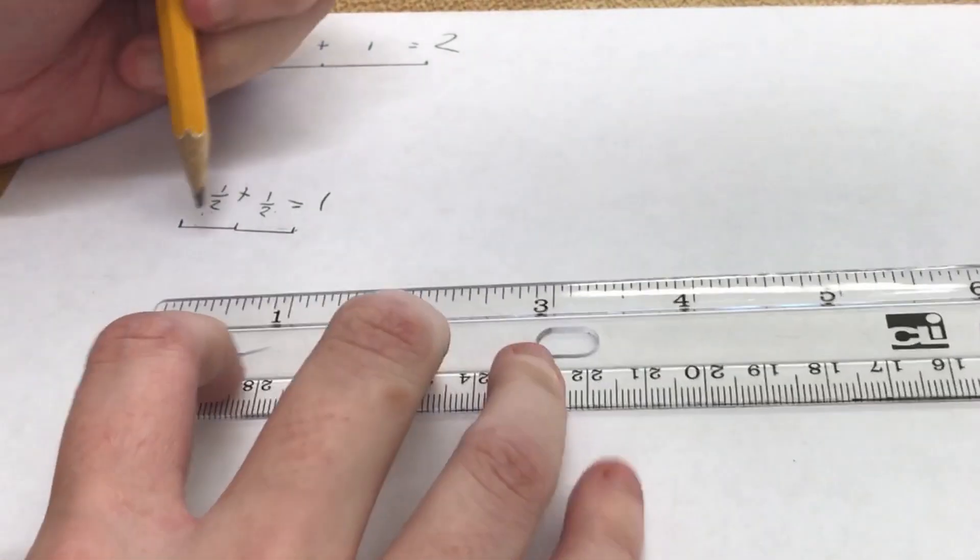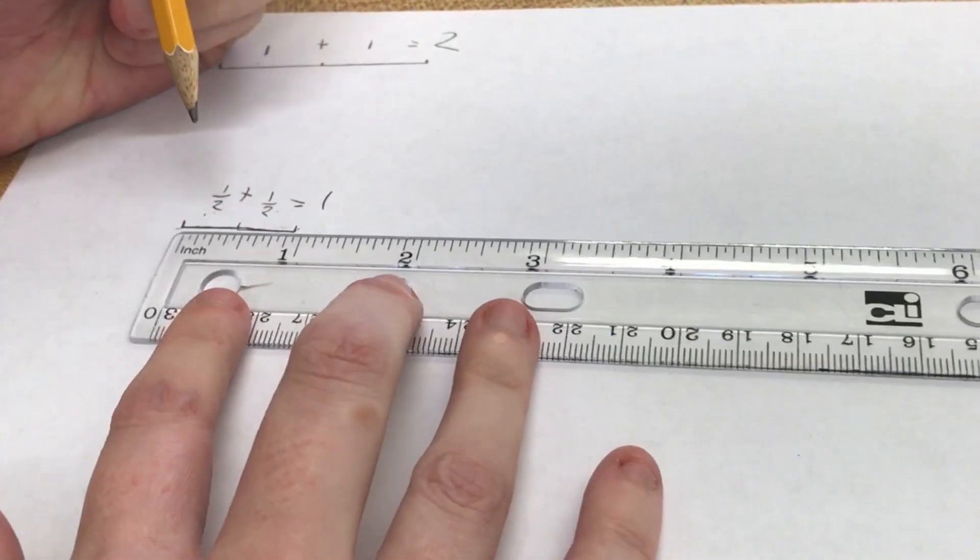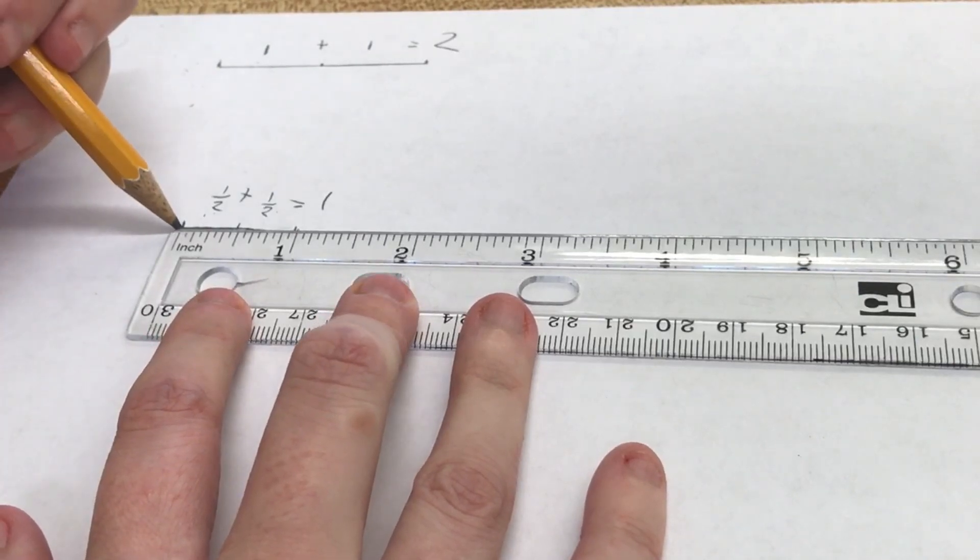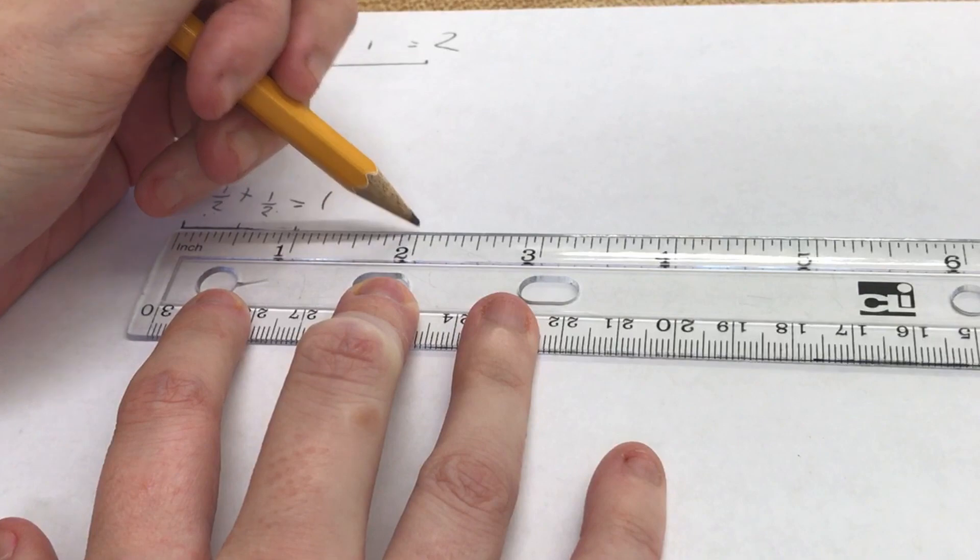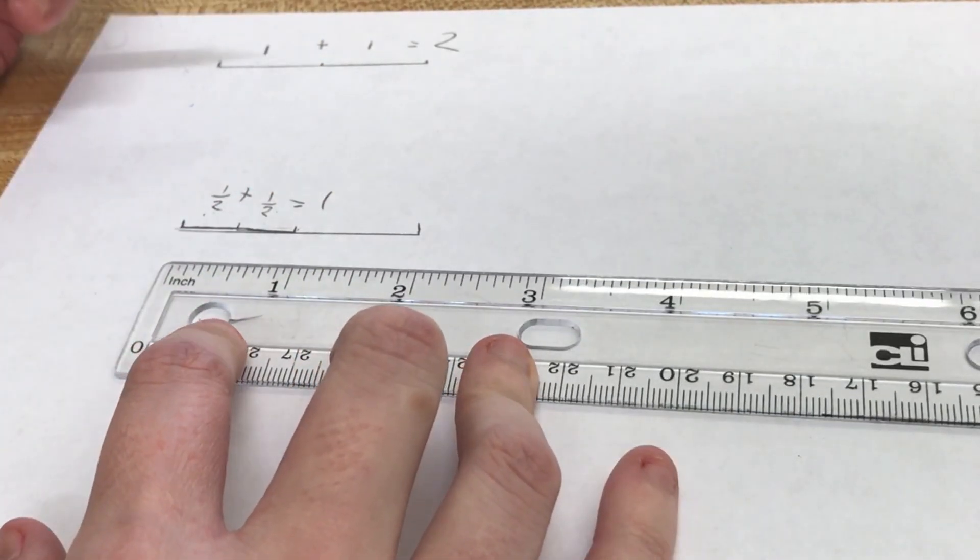So what if I wanted this line right here to become two inches? I would line this back up, start at my zero, go all the way to the two, and make a mark. Now my line is two inches long.